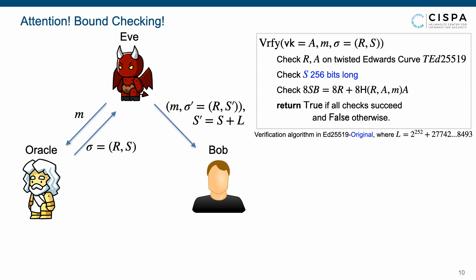Regarding strong unforgeability, the case becomes different. When querying signing oracle on message M for signature (R, S), the adversary can forge a new signature upon the same message M by replacing S by S' which equals S plus L.